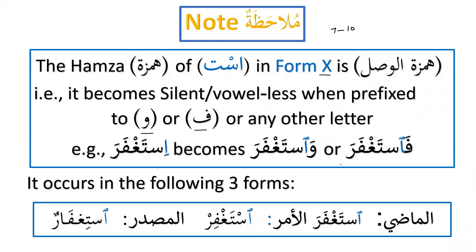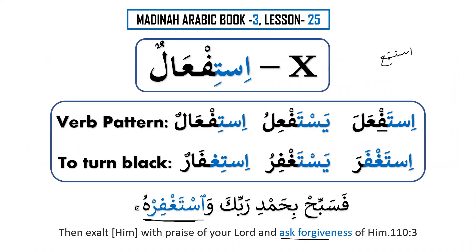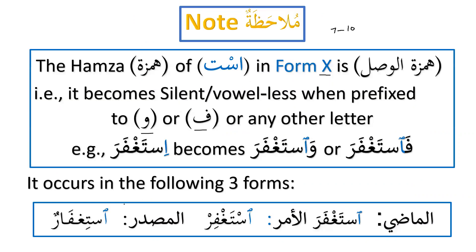In the Quranic example فسبح بحمد ربك واستغفره, we pronounce it as wastaghfar. This is specific to the tajweed of the Quran, where we connect it. In modern standard Arabic it's okay not to, but in Quranic tajweed we must connect it. The Hamzatul Wasl occurs only in three forms: the madi, the fi'l al-amr, and the masdar.